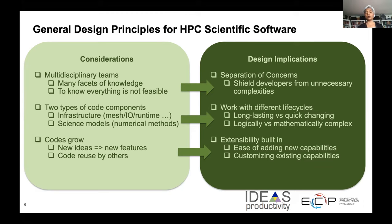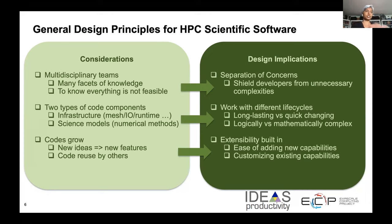Codes always grow because new ideas come in and they usually translate into new features. People almost always use codes differently — even if you build a code for your own use, chances are someone will find it useful and want to add a capability. If you have extensibility built into your code, or the ability to customize existing capabilities, the code will have a longer life and find more use in the community.